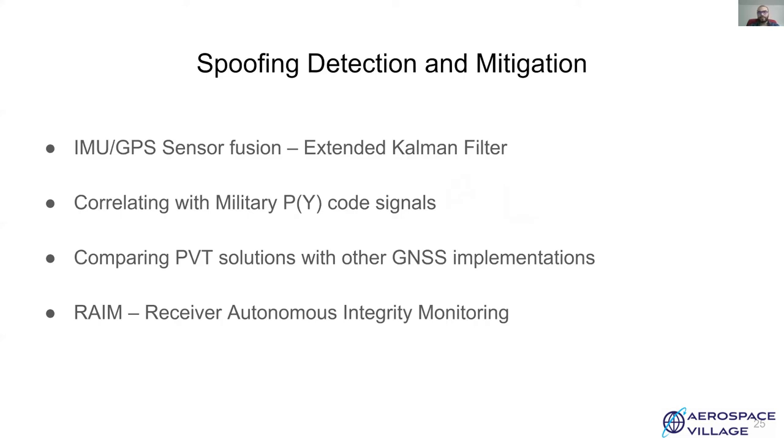Here are some other spoofing detection techniques. Inertial sensors can track physical movements of a vehicle. However, they are notorious for drifts and biases which can introduce significant errors. Researchers have proposed various implementations involving extended Kalman filters where IMU sensors are combined with GPS. Inertial measurements are used to track and validate the derived PVT solutions. Cross-correlation between unknown encrypted GPS signals on L1 carrier and known open source GPS signals can lead to effective spoofing detection strategy.